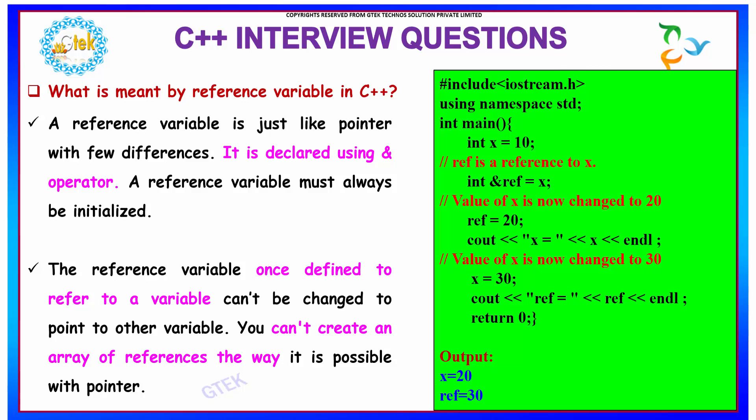What is meant by reference variable in C++? A reference variable is just like a pointer with a few differences. It is declared using an ampersand operator, and a reference variable must always be initialized.